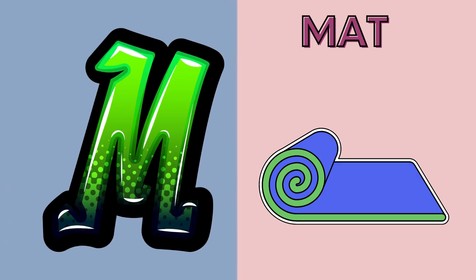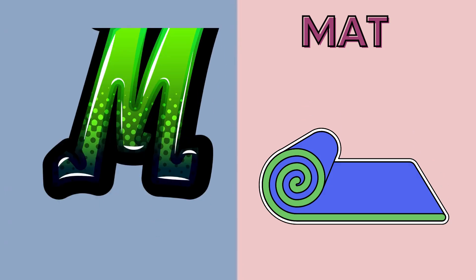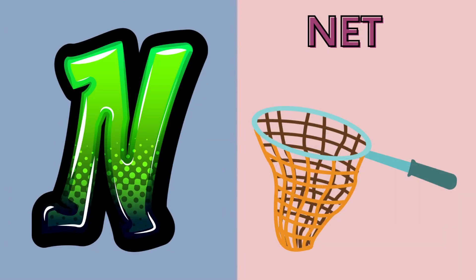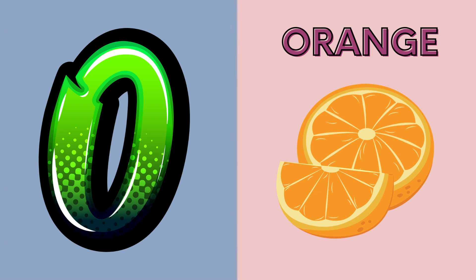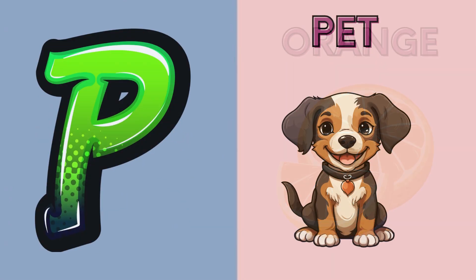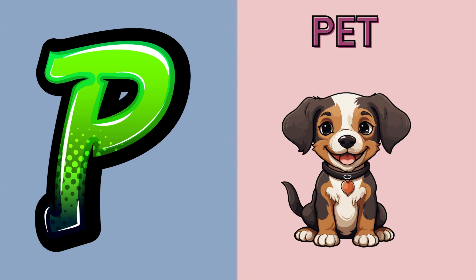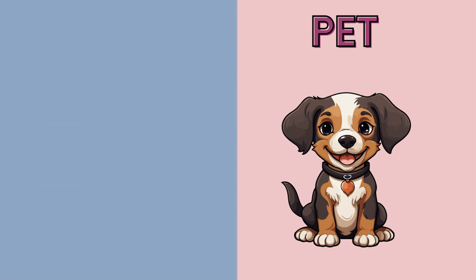M is for mat, m-m-mat. N is for net, n-n-net. O is for orange, o-o-orange. P is for pet, p-p-pet.